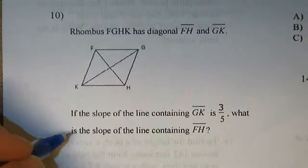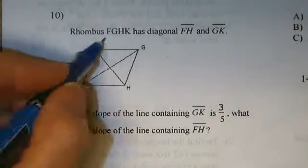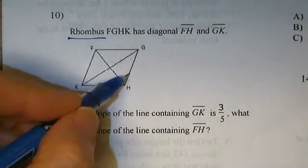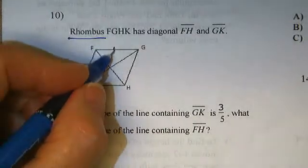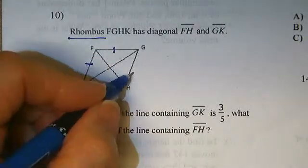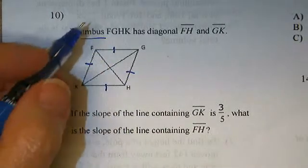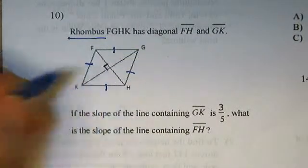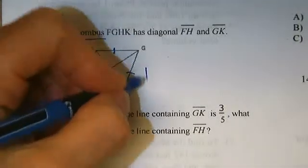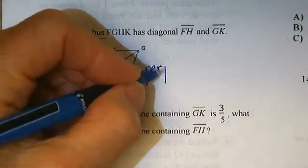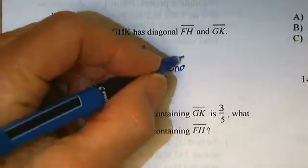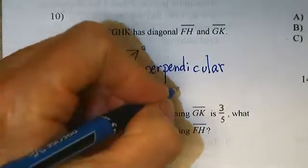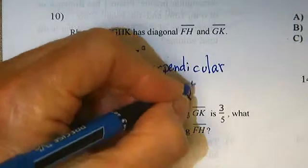Here is what you have to remember. A rhombus is a parallelogram with all sides equal. We also need to remember that the diagonals of a rhombus are perpendicular. That means they intersect at a 90 degree angle.